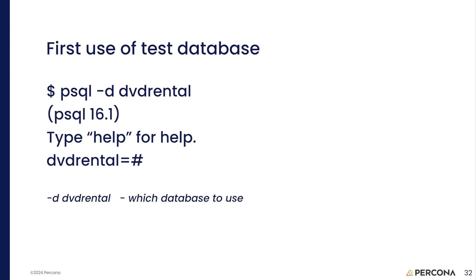For our first use of the database we're going to use psql. Log out of the postgres account if you're still in it, get into your normal shell account, and type psql -d dvdrental. You'll get a prompt showing 'dvdrental=#' — the equal sign before the octothorpe means you have privileges, so be careful.